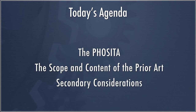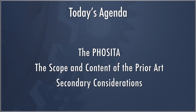Then we're going to talk about the scope and content of the prior art. This is a major area of disputes in obviousness cases. Defining what the scope of the prior art is, what art is available to use in the obviousness analysis, as well as what it contains, are critical aspects to understanding obviousness. And finally, we're going to talk about secondary considerations, which we mentioned earlier in the course, but said we would discuss in more detail as they have emerged as a critically important part of the non-obviousness analysis in the modern era.